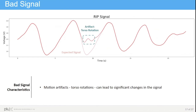The second example is the motion artifact caused by torso rotation. As we can see in this plot, also in the blue border, there are significant changes in the signal, where the peak and the valley will be much earlier and much shorter than in the expected signal.